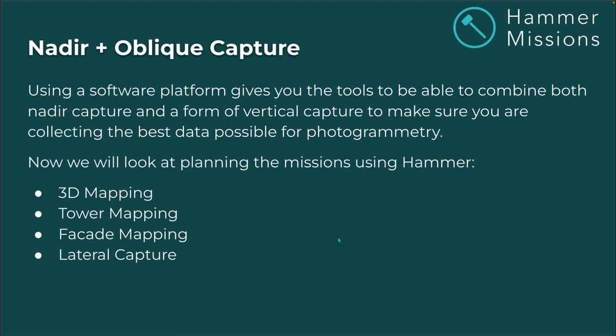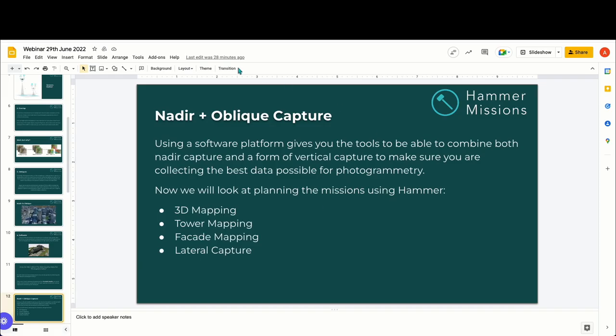Using a software platform gives you the tools to combine both nadir capture and a form of vertical capture to make sure you're collecting the best data possible for photogrammetry. We'll now look at planning a mission using Hammer, going through 3D mapping, tower mapping, facade mapping, and lateral capture.